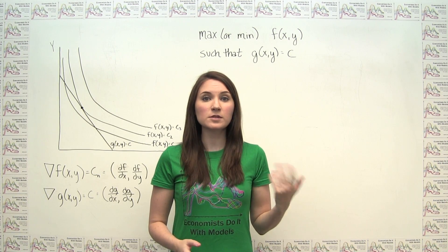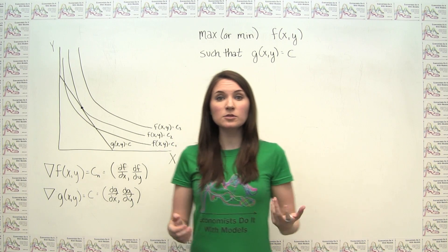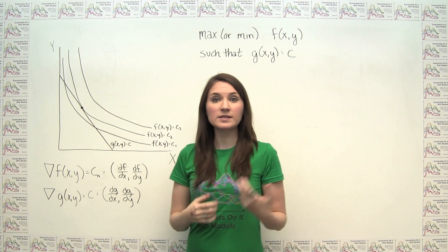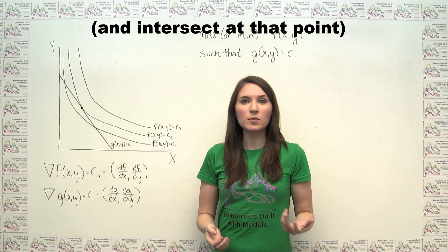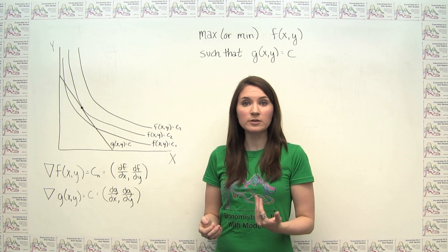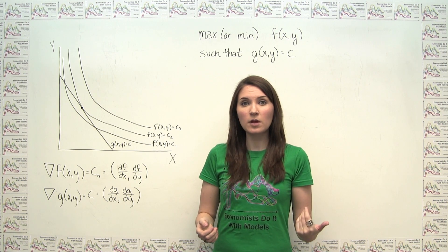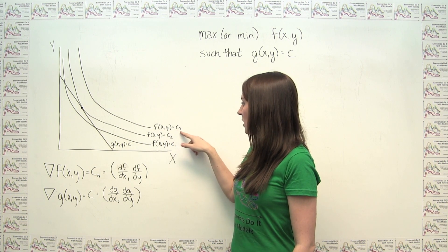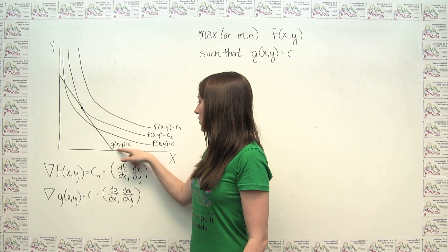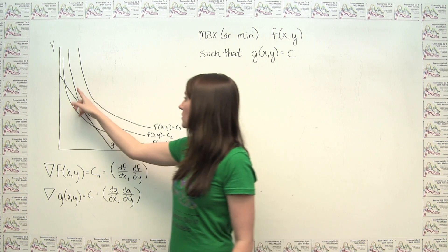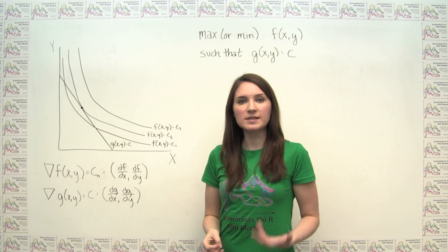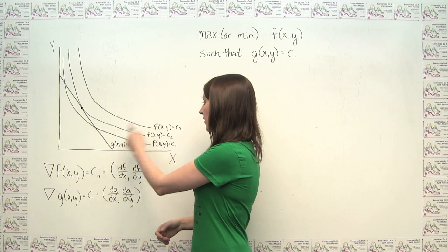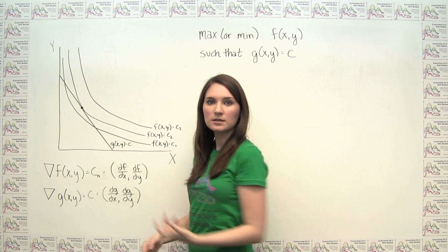The key feature of the solution to this optimization problem is that the two curves are tangent at the optimum point — they have the same slope there. The slope of a curve gives the direction we must travel to stay on that curve. Because f(x, y) and g(x, y) are each set equal to a constant, the slope of each curve represents the direction of zero increase in f(x, y) and g(x, y) respectively.